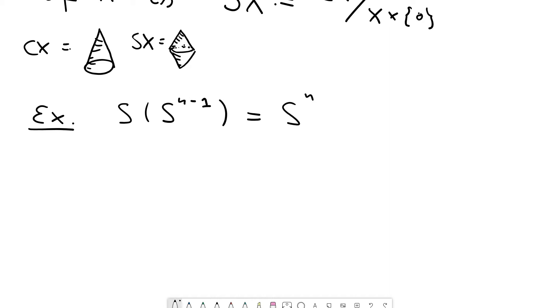But why is it true? Well, by definition, the suspension of the n minus 1 sphere, that is the cone of the n minus 1 sphere, divided by the n minus 1 sphere times 0.